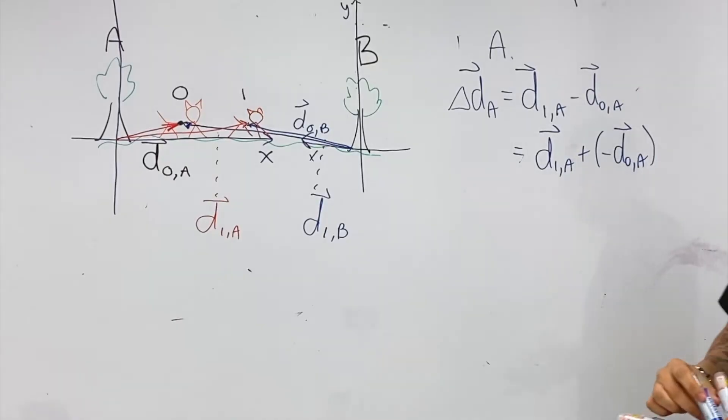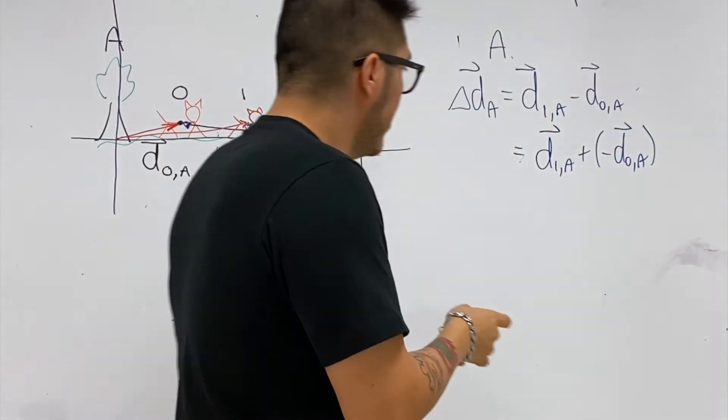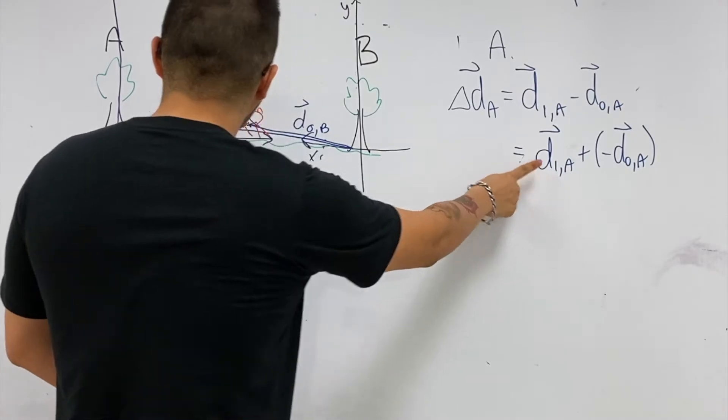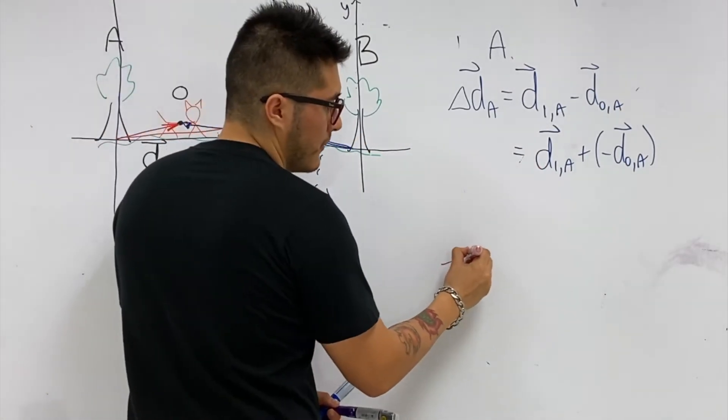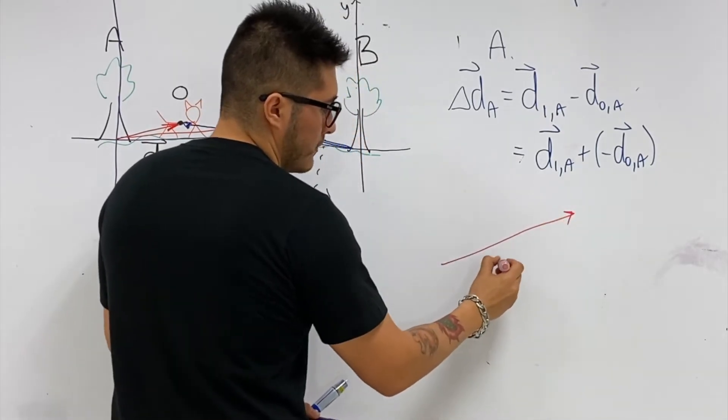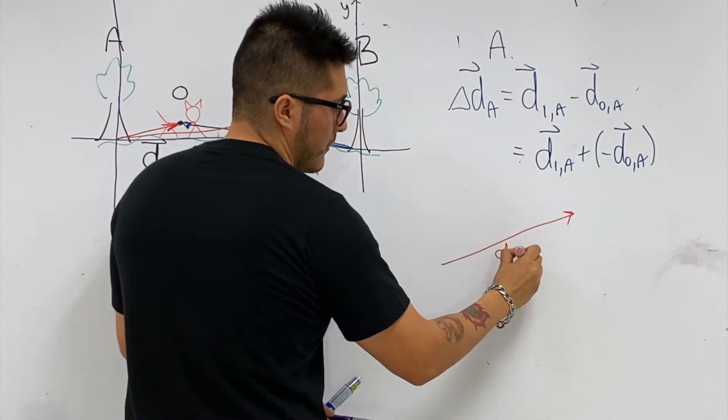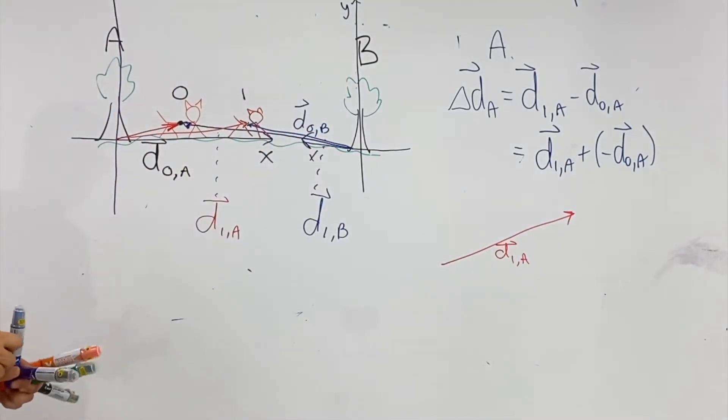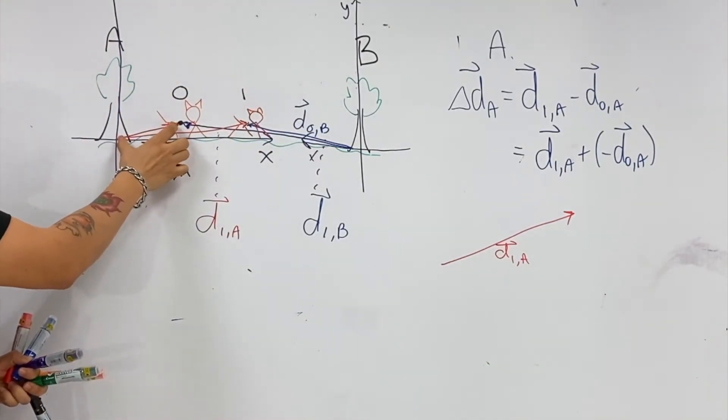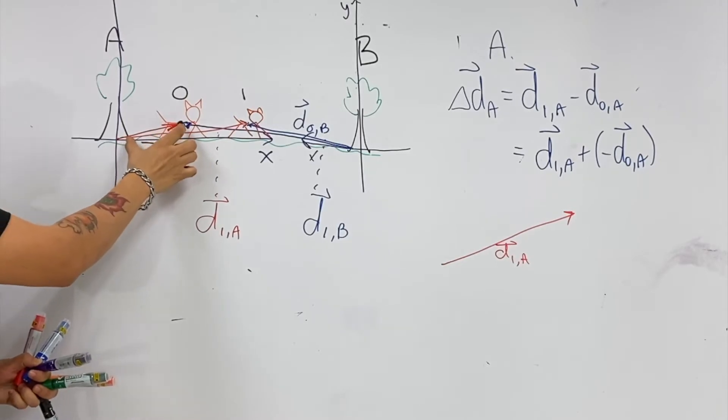And we could just draw our vectors. So let's see what it looks like. Let's take D1A, that's a really long one here. And D initial A, that was the shorter one. But now we need to show that it's going in the opposite direction.